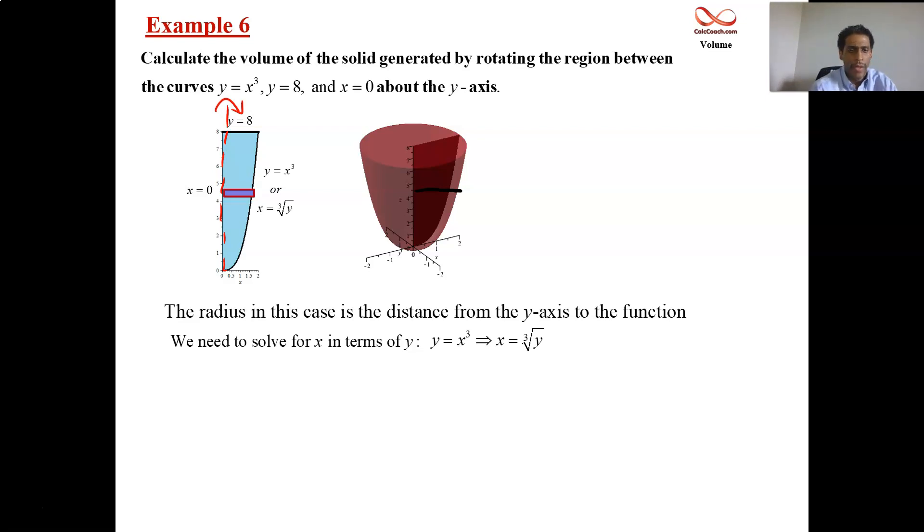You're ready to go to the formula, which is pi times that radius squared. We have cube root of y, and we square it. Watch your exponents. y is to the one-third for the cube root. When you square it, you multiply those exponents, one-third and two, so it's two-thirds. Straightforward integral with nice bounds, 0 and 8.